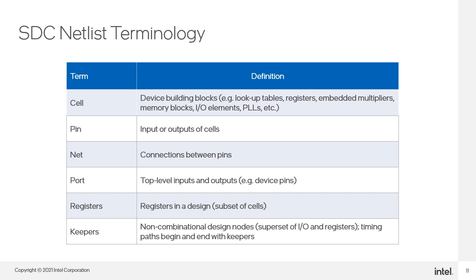The SDC specification has a list of objects that can be directly correlated to objects in the timing netlist. A cell is any device building block in the design. A pin is the input or output of a cell. A net is the connection between pins. A port is a specific kind of cell that represents entry and exit points to the design — the port category is a subset of the cell. Registers are flip-flops and are also a subset of the cell. Keepers is the combination of ports and registers, or you could define it as timing endpoints, and is also a subset of the cell. The register and keeper objects are part of the extension that Intel has added and are not part of the standard SDC specification.